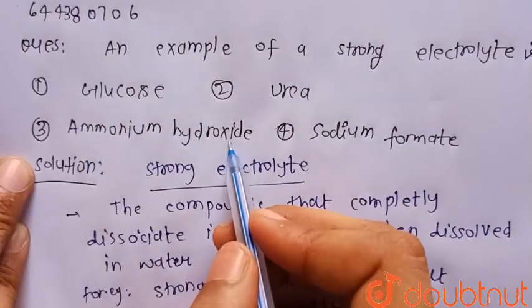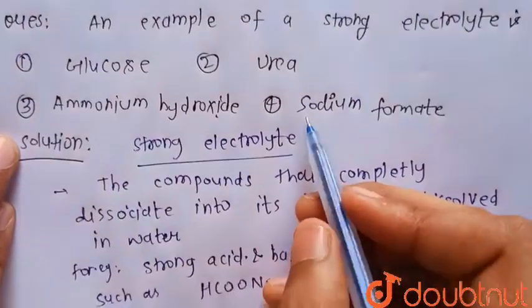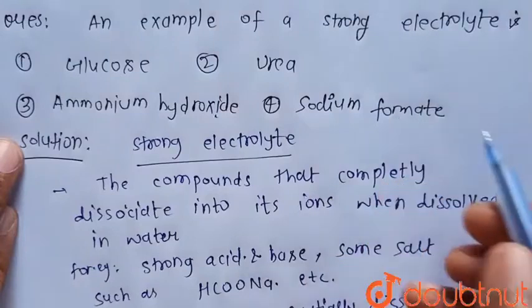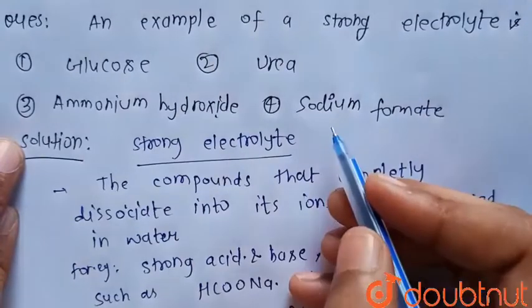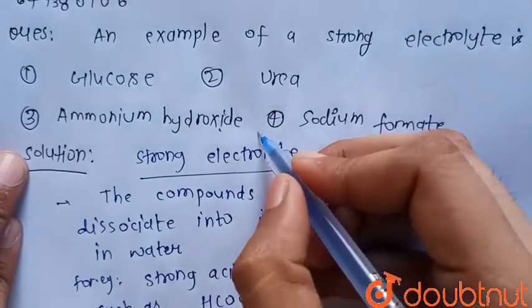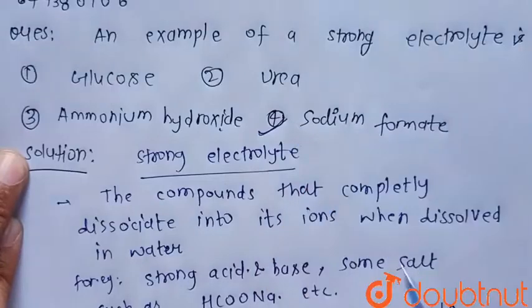Ammonium hydroxide is a weak base, so it is a weak electrolyte. Only sodium formate (HCOONa) is the strong electrolyte. Hence, option number 4 is the correct choice.